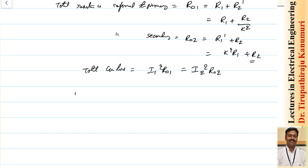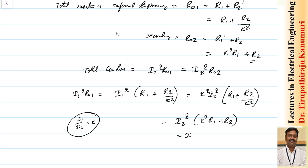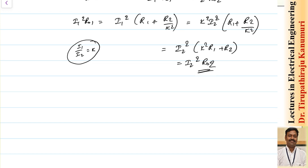Let us prove that these are equal. I1²R01 = I1²(R1 + R2/k²). Since I1 = k·I2, this becomes k²I2²(R1 + R2/k²) = I2²(k²R1 + R2) = I2²R02. So we can confirm that the total copper losses referred to the primary or secondary side are one and the same.